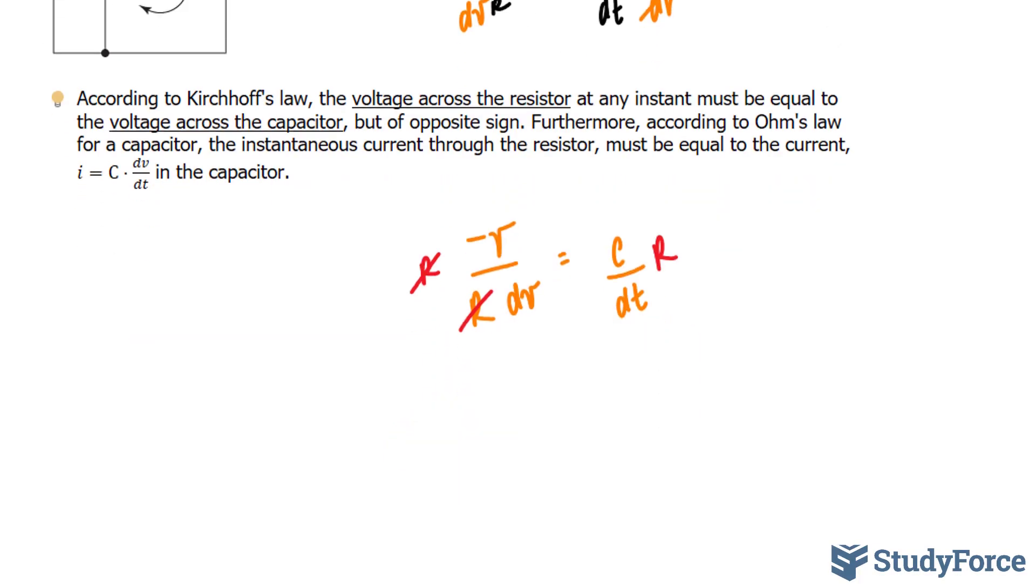And now what we have are two sides where dV and dt are in the denominator position. We need to make them be in the numerator position. And the way we can do that is we can reciprocate both sides. Take a look. We'll have dV at the top, and at the bottom we have negative V. And over here we'll have dt at the top and CR at the bottom.